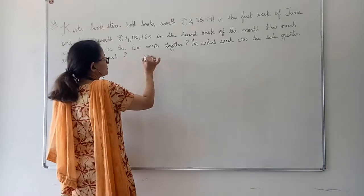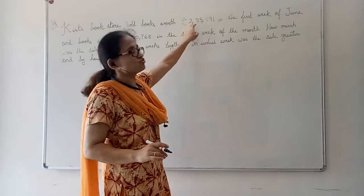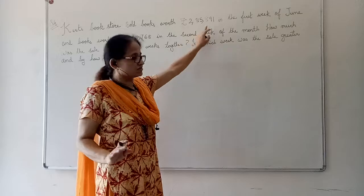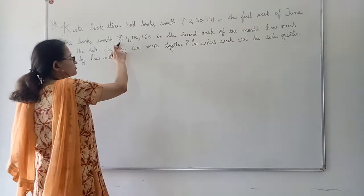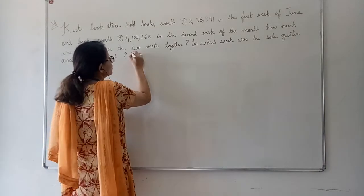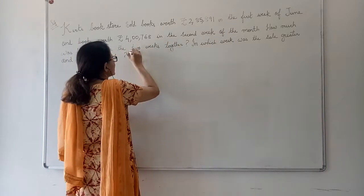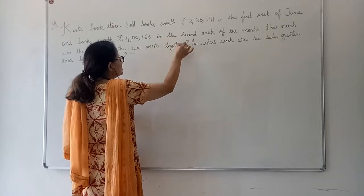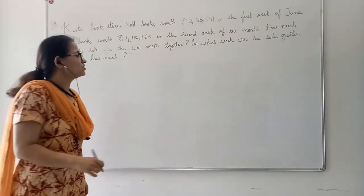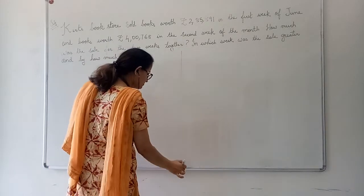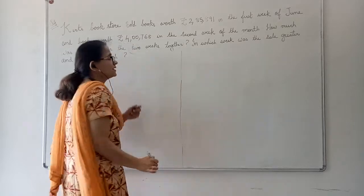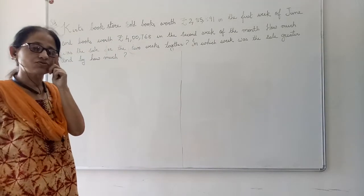That means in the first week, they sold 2,85,891 books. In the second week, they sold books worth rupees 4,76,768. Now what was their total sale together? Together means total sale in the two weeks. So for this, we will do addition. When it comes together, all together, how many total books they sold? For that, we will do addition.